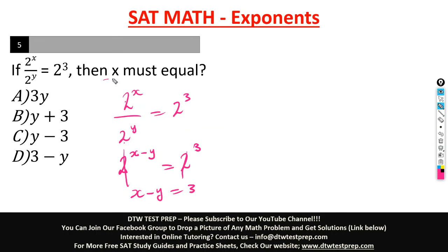The question says x must equal, so you need to make x stand alone on one side of the equation. Take negative y to the other side. When you cross a negative number over, it becomes positive y. So x equals 3 plus y.